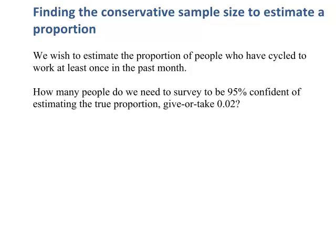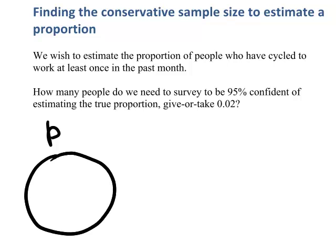This population proportion we call P. The population may be all adults in your city, or all adult males in your city, or some other population. Whatever the target population, we can't possibly survey every single person because it's probably going to be way too large, and this means surveying everybody will be very expensive and very time consuming. The only feasible way to estimate this proportion is to survey a sample of people within this population.